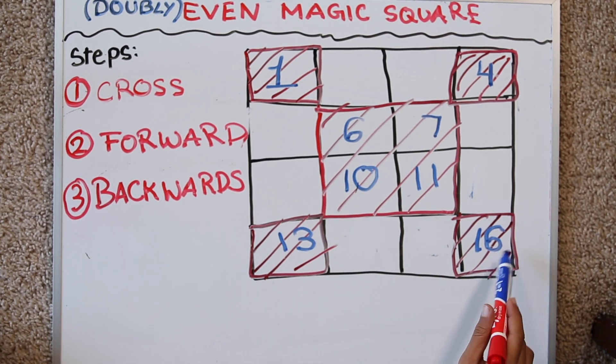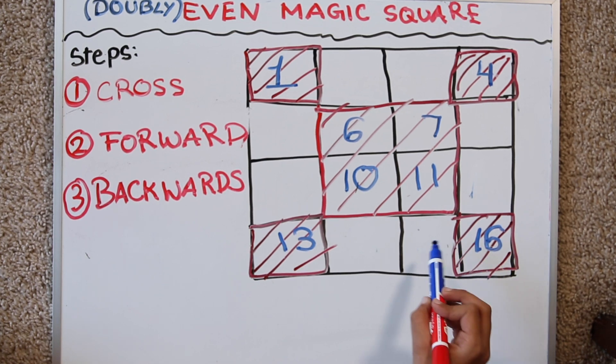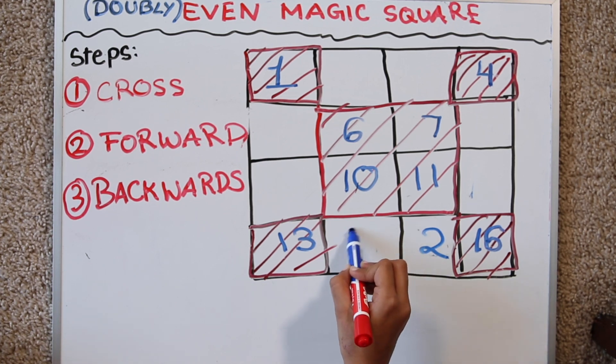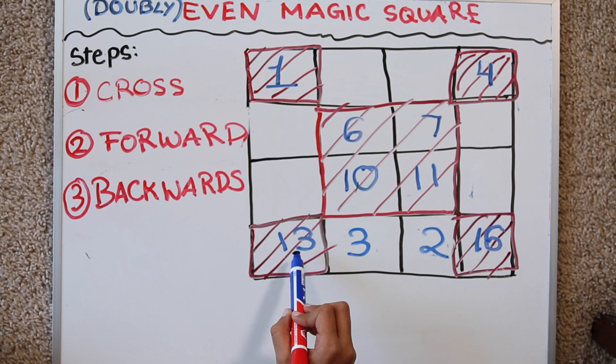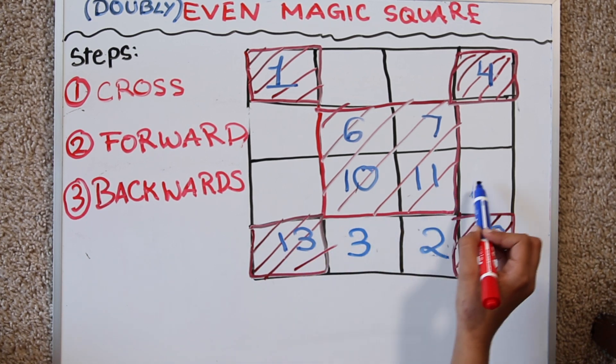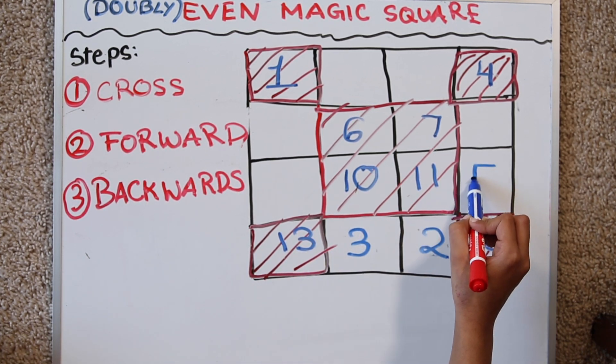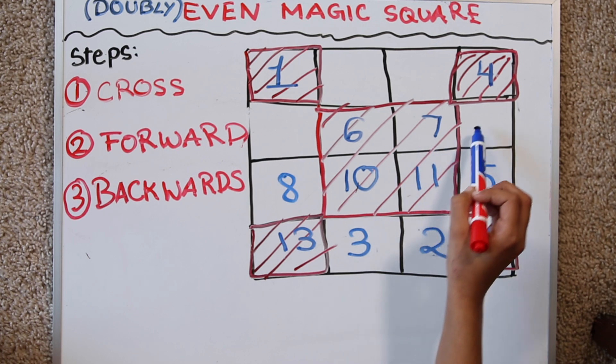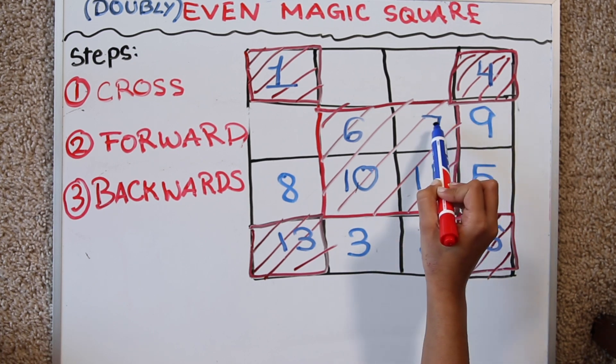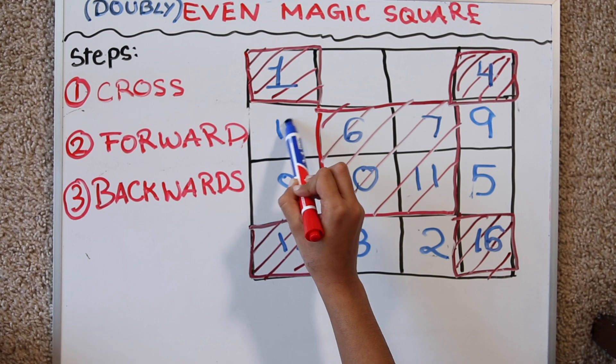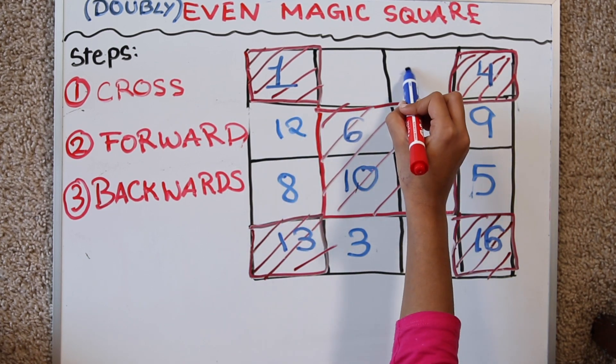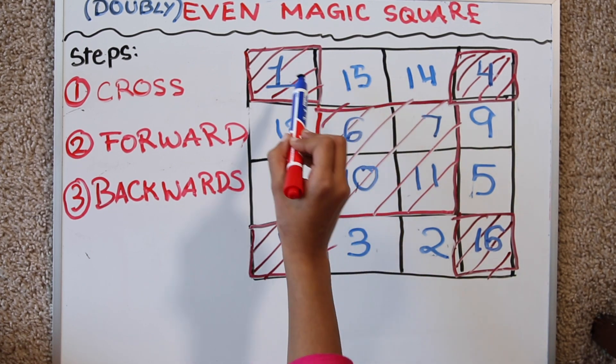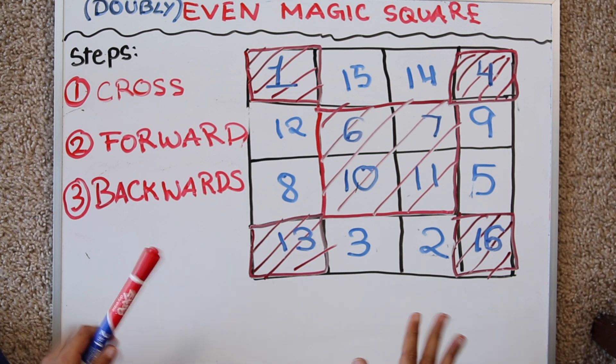This would be 1 but there's already 16 there. So I'm going to skip it. So this would be 2. And since there is nothing here this would be a 3. This would be a 4 but there's already a 13. So we're going to skip it. This would be a 5. 6, 7, 8, 9, 10, 11, 12, 13, 14, 15. That would be 16 but there's already a 1. So that's pretty much it. It was really simple.